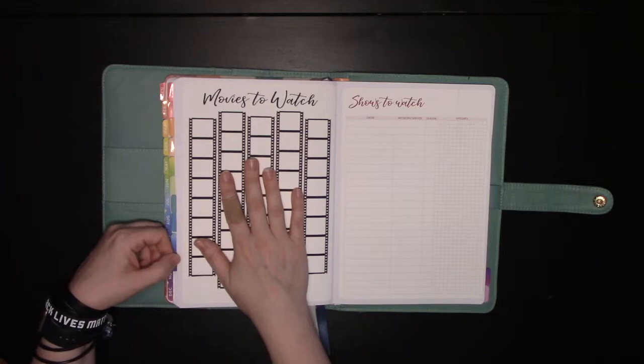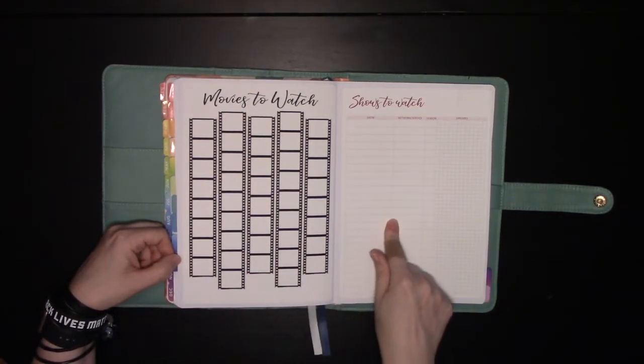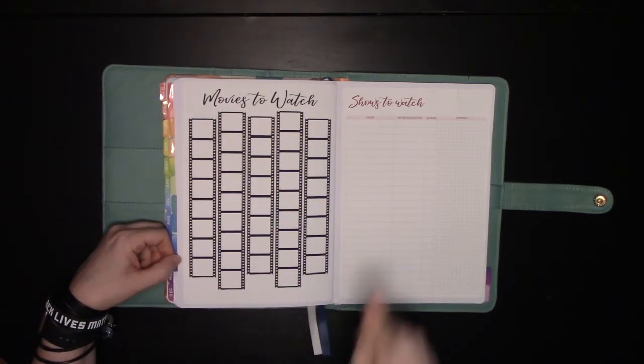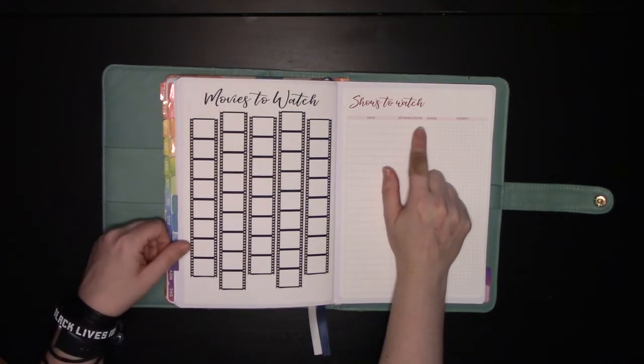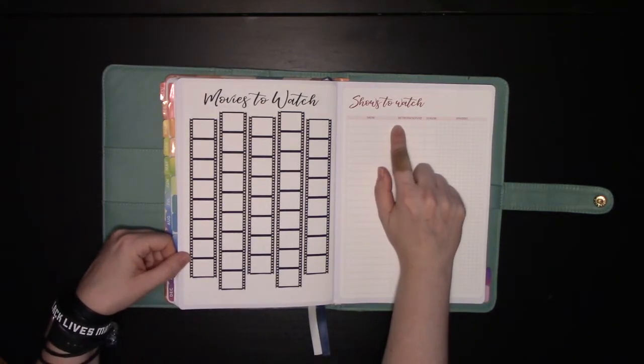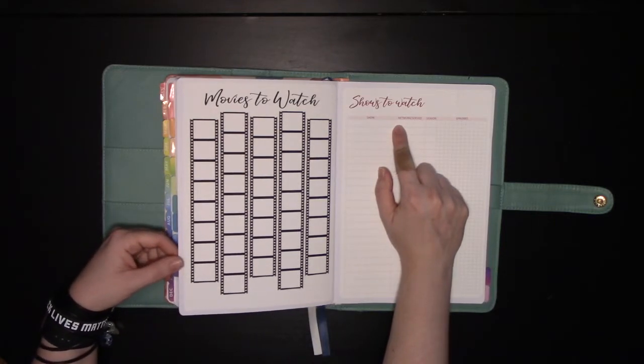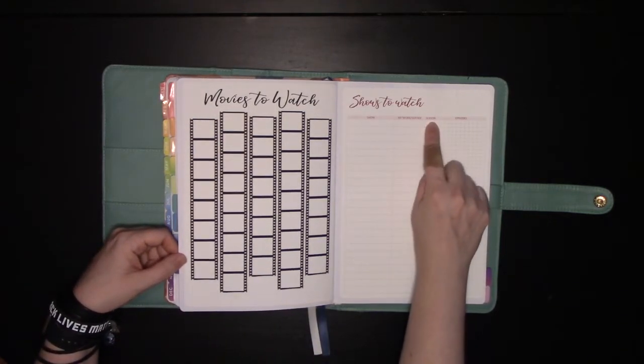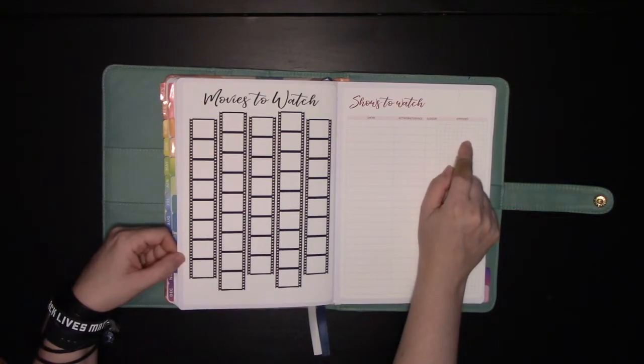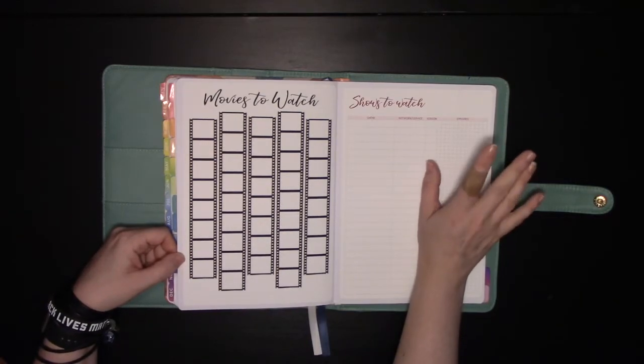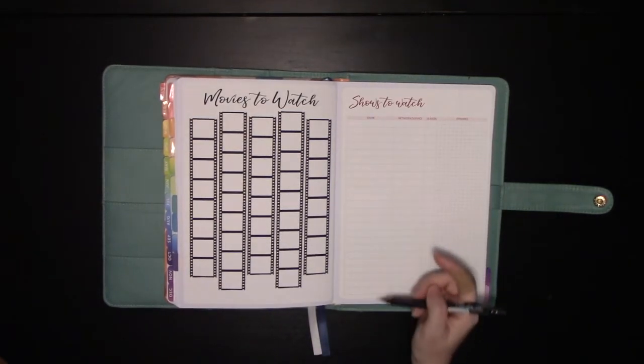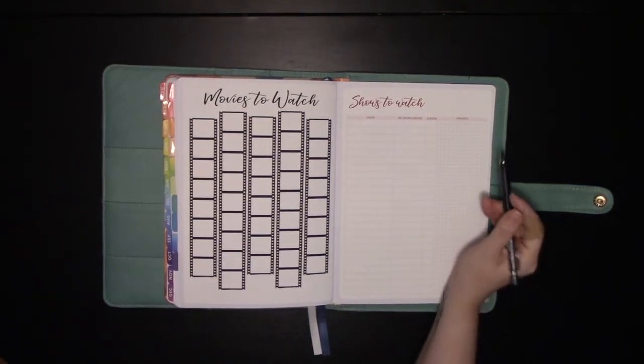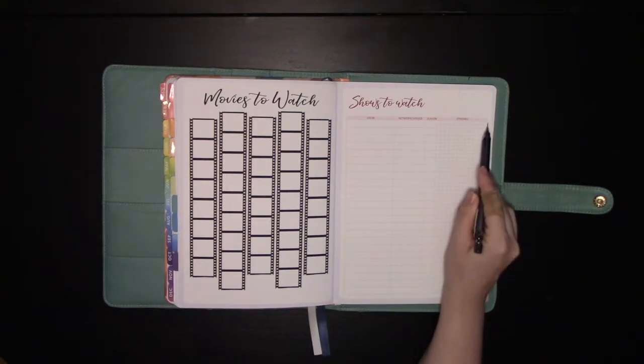In my fun kind of relaxation tabs, we have movies to watch in the shop, shows to watch, a brand new sticker in the shop, a show name, the network or service. So like if it's on a channel, you can put the channel there. If it's on like Amazon Prime or Netflix, you put that in there. The season and then the episodes.